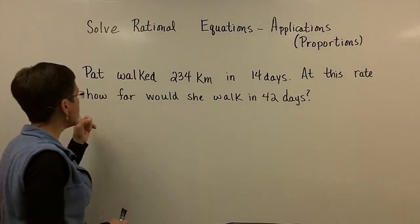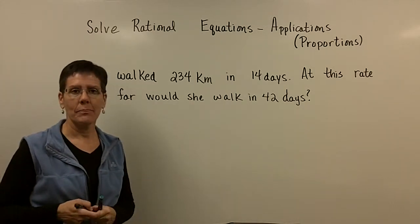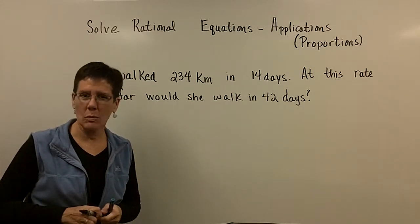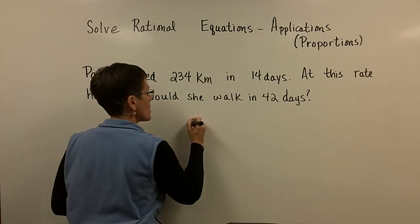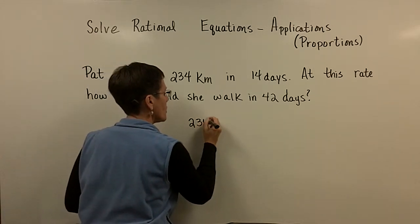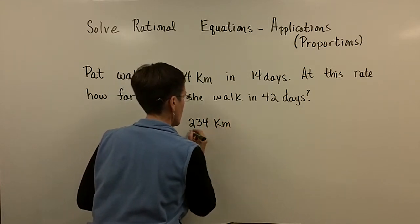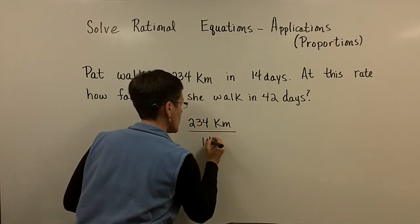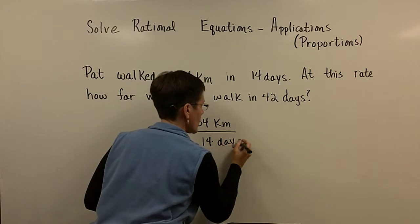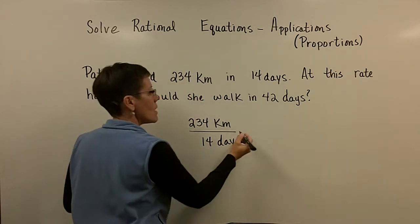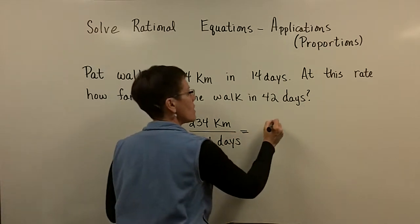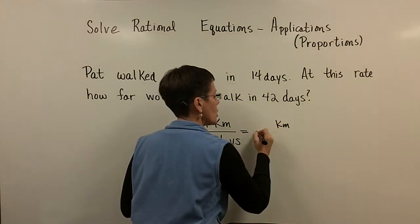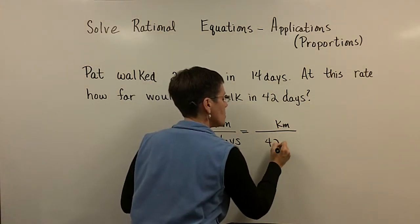At this rate, how far would she walk in 42 days? I'd like to advocate you writing this as a proportion if I could. So if Pat walks 234 kilometers in 14 days, yes you could turn that into a rate. That ratio though should be equal to some number of kilometers that she could walk in 42 days.